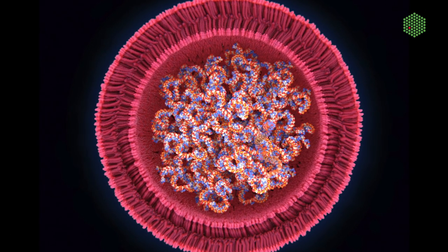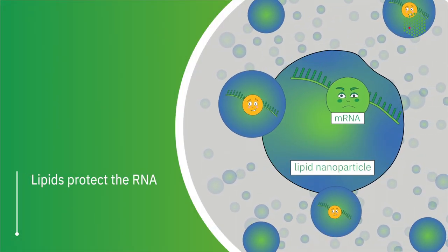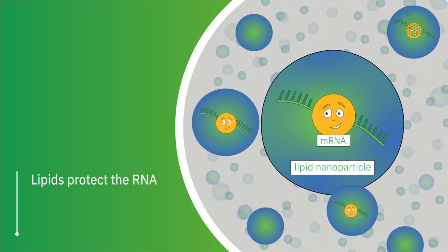Lipid nanoparticles protect the RNA on its way to the human cell. The key to a great RNA vaccine is that they have to combine and mix together and then stay together as little droplets and only release the RNA when you want them to.